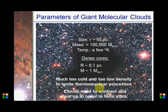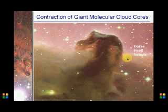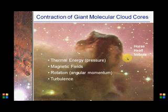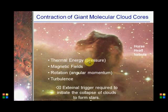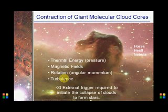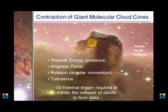Clouds need to contract and heat up in order to form stars. In order to have a protostar there must be certain conditions: thermal energy caused by pressure and collisions, magnetic fields, rotation and angular momentum, and turbulence. An external trigger is required to initiate the collapse of clouds to form stars. This is a well-known nebula called the Horsehead Nebula.